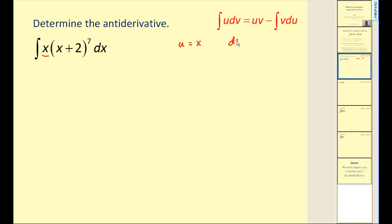Therefore, our differential u or du would equal the derivative of this, which would be 1 times dx. Now the remaining part of the integral, x plus 2 to the 7th dx would have to be our dv.